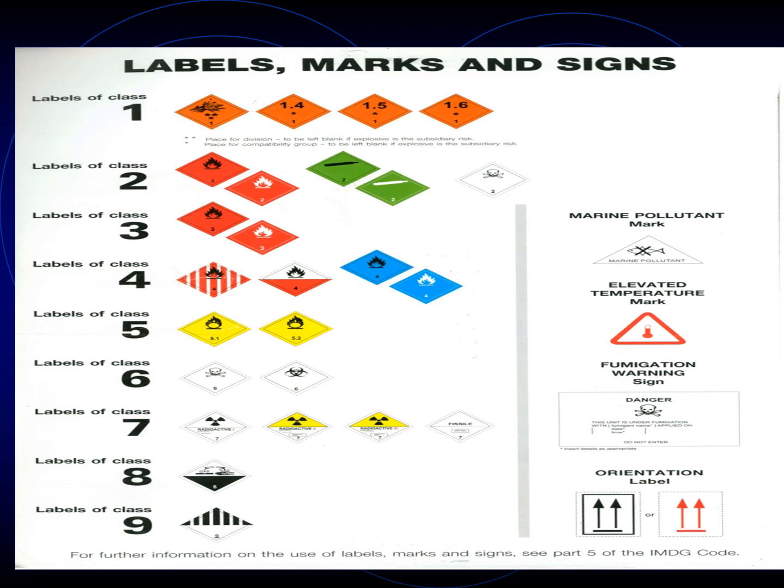Volume one classifies the IMDG Code. Dangerous goods are classified according to nine classes: Class 1 is explosives, then we have flammable gases, flammable liquids, flammable solids, oxidizing substances, poisonous substances, radioactive substances, corrosives, and Class 9 is the miscellaneous category. Each class also has subclasses.